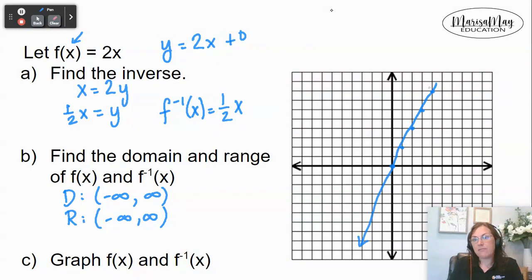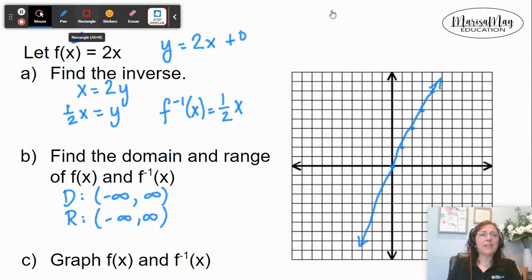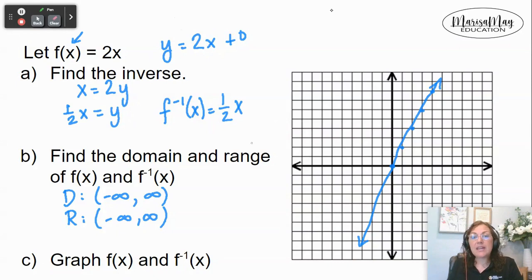And again, forgive me for drawing with the mouse. Let me grab a different color to do the inverse. And my inverse is y equals one half x. So again, I have a y-intercept of zero. But this time, I'm going up 1 over 2, up 1 over 2, up 1 over 2, and so forth. And there we go. This is my inverse.